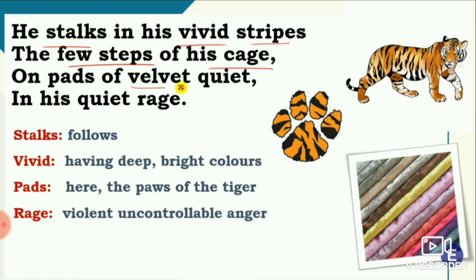Pads are the base of the tiger's paws, which are very spongy, so when the tiger walks in his cage we cannot hear the sound of his feet. 'In his quiet rage' means the tiger is confined and angry, but he cannot display his anger because he knows showing anger is useless — no one will consider it — so he remains calm and quiet.